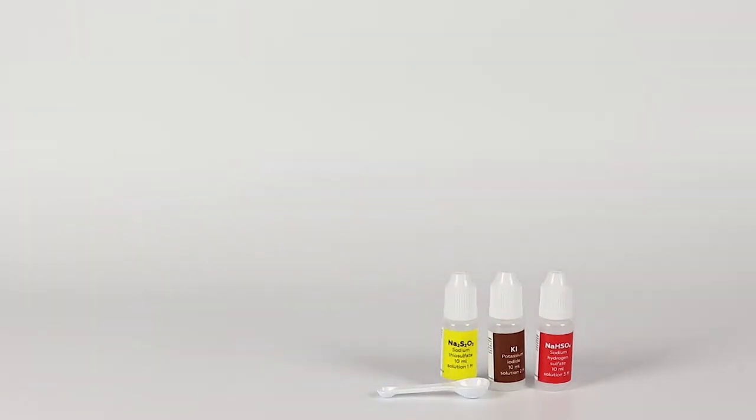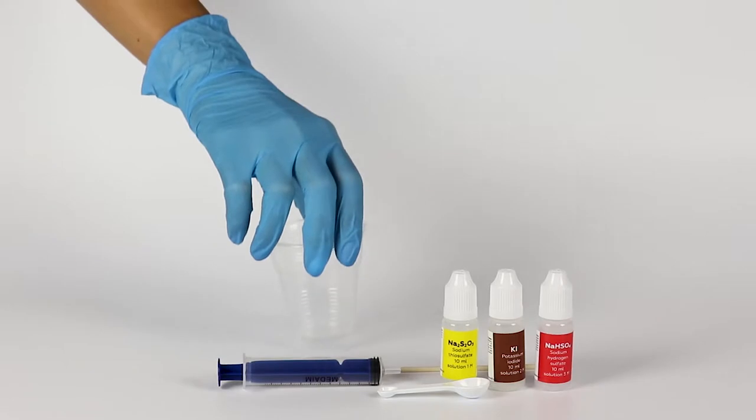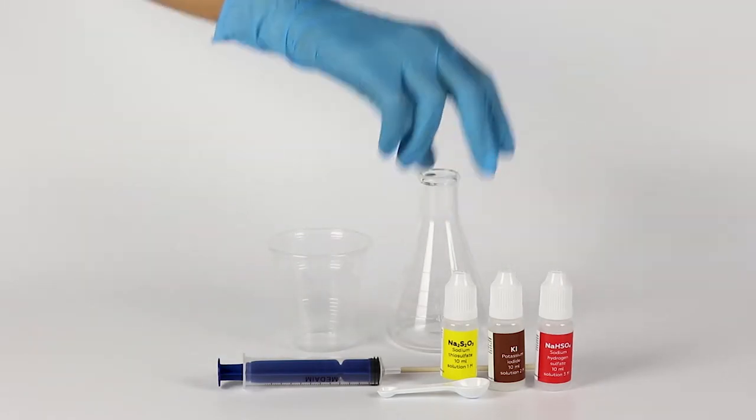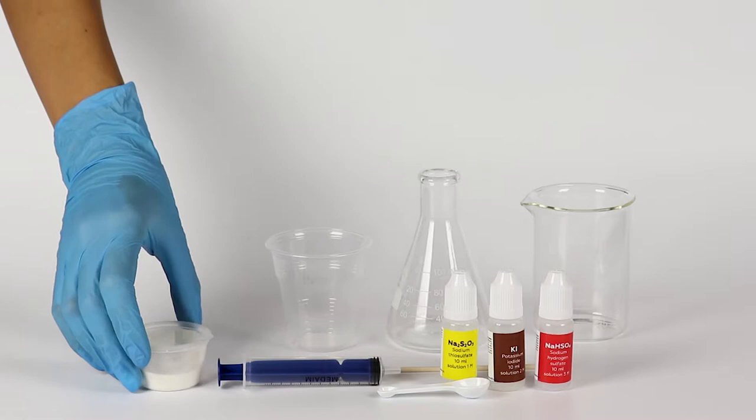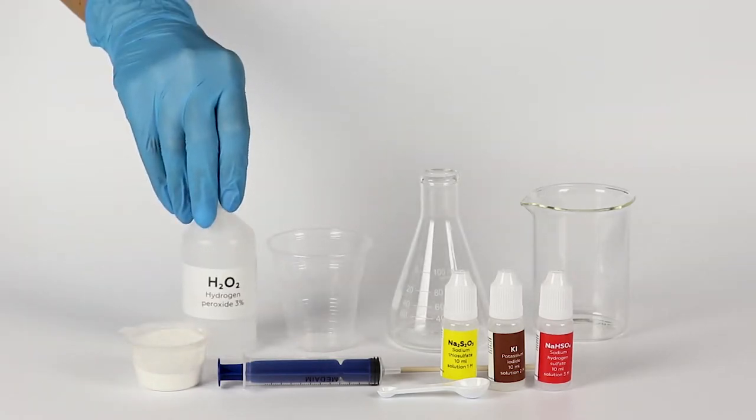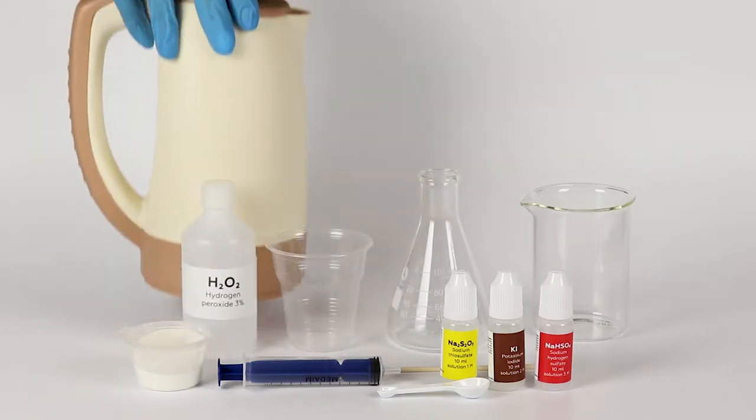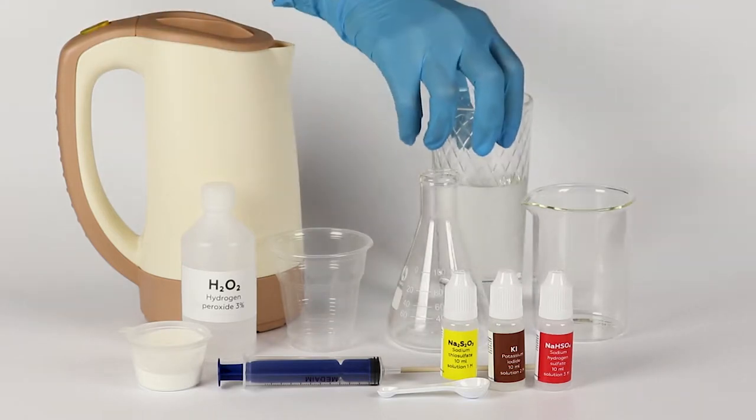Take a double-ended measuring spoon and a wooden stick, a syringe from the experiment set. Take a disposable cup, the flask, and the beaker from the starter kit. Also, prepare some starch, hydrogen peroxide 3% solution, some boiling water, and some cold water in advance.